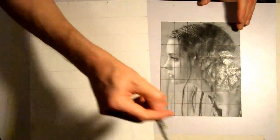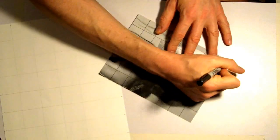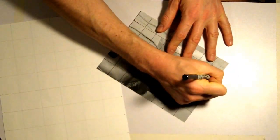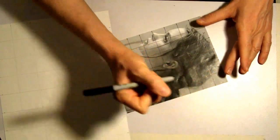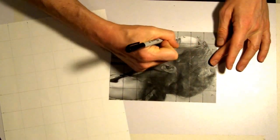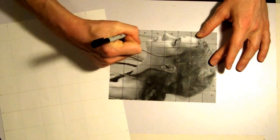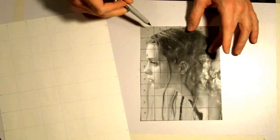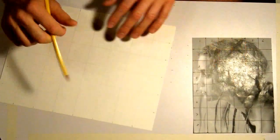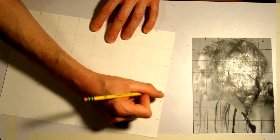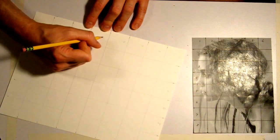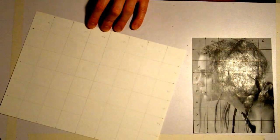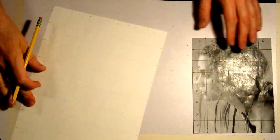And then the last thing you want to do is actually number each box across the top and across the edge vertically. So I've got 1 through 6 and 1 through 8. I'm going to do the exact same thing on my drawing paper, very lightly number. This will make it easier when you're drawing to line up or match up the boxes to where you are in the drawing process.